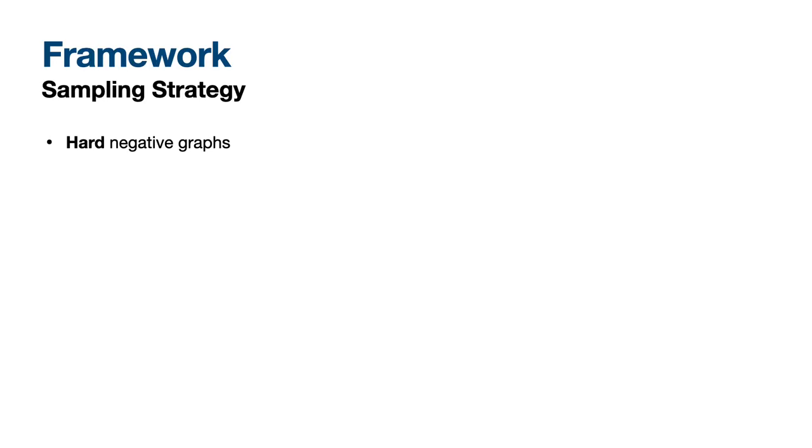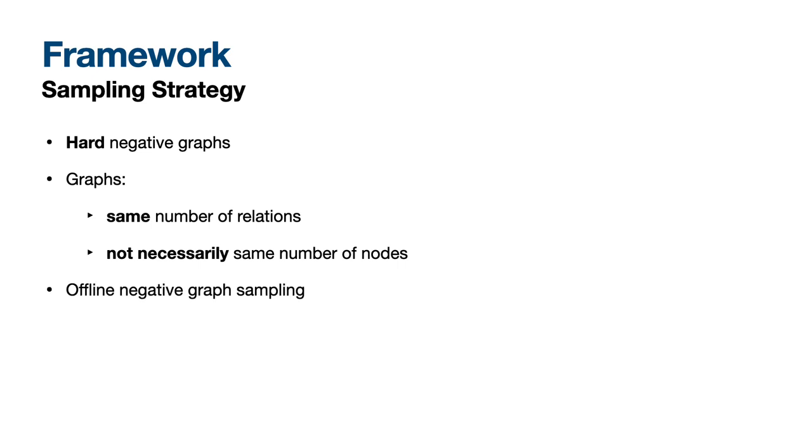We move on to the description of the framework, and as contrastive learning is a key technique of this study, the sampling strategy is very important. We apply hard negative graph sampling by randomly selecting tokens that are not part of an adverse effect entity, keeping the correct drug token, and vice versa. The positive and negative graphs have the same number of relations, but not necessarily the same number of nodes. The negative graphs are sampled offline, and in each training step a number of those is used. This is a hyperparameter of the model.